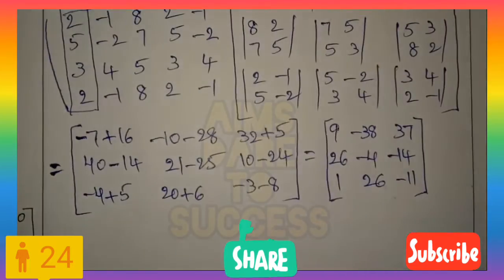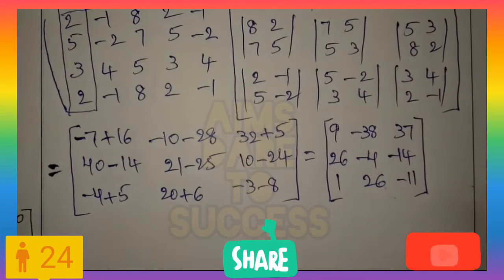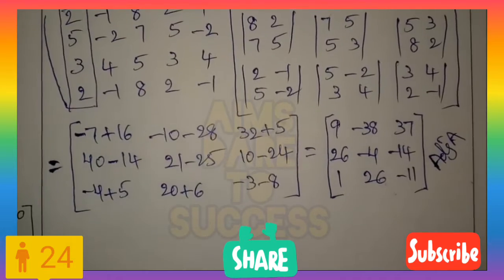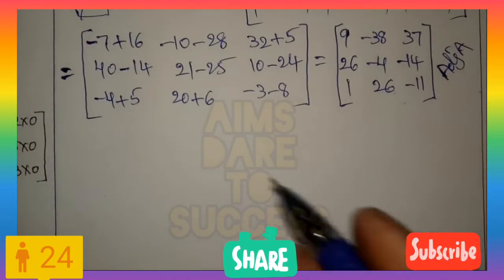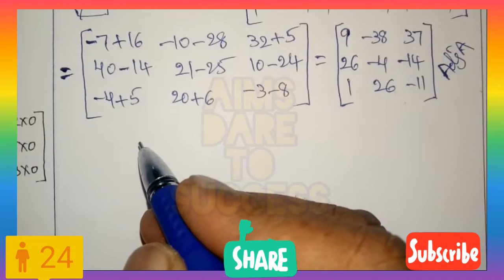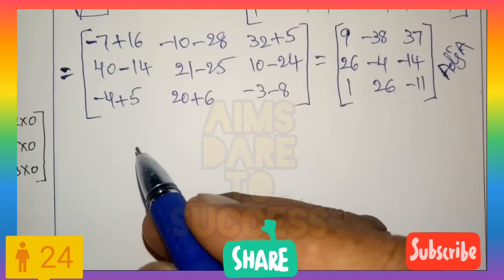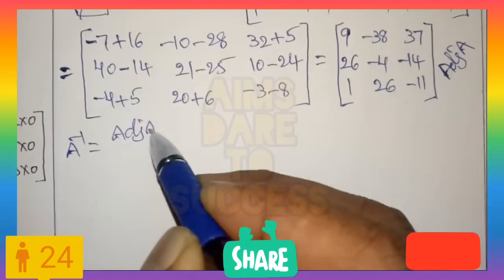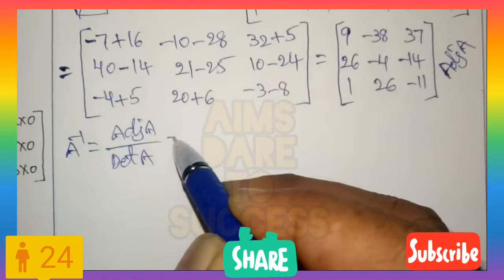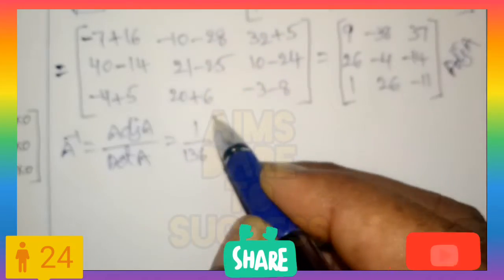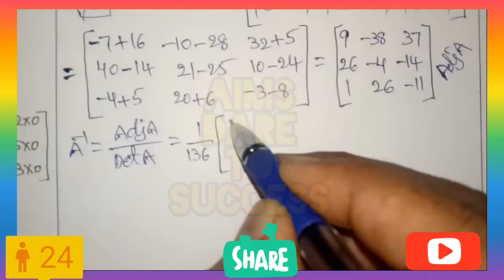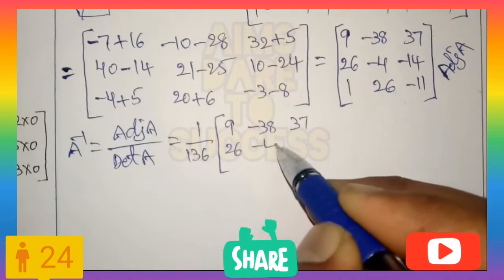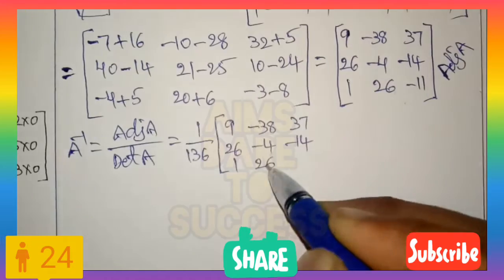So this is the adjoint of A. If you use this shortcut, you will get the result within 3 steps. Next, after getting adjoint(A) and det(A), you can apply A inverse. A inverse equals adjoint(A) divided by det(A). The det(A) value we got is 136. So A inverse = (1/136) × [9, −38, 37 / 26, −4, −14 / 1, 26, −11].